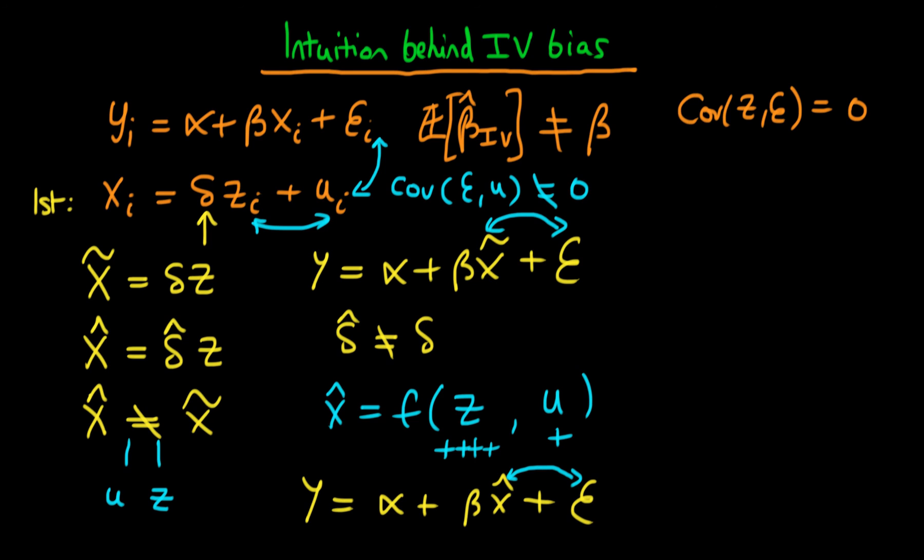But notice that as our sample size gets bigger and bigger, this dependence on u gets smaller and smaller because sampling error isn't actually a problem anymore until at the limit when our sample size is equal to our population size. We then have that x hat is only determined by z. So in those circumstances, this covariance between x hat and epsilon actually disappears. So we have asymptotic unbiasedness of IV estimators.